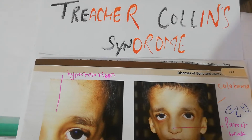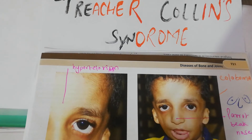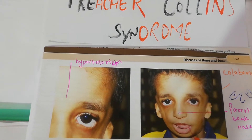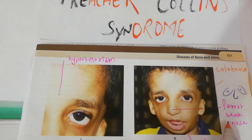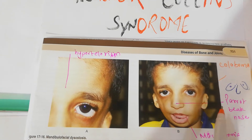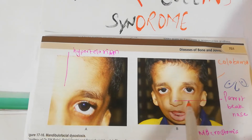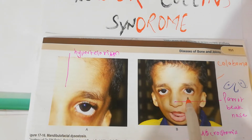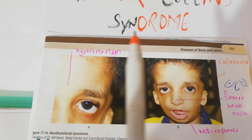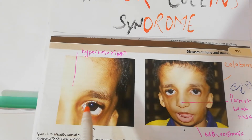This is Treacher Collins Syndrome — a mandibulofacial deformity where the mandible is recessed. Here you can see a parrot beak nose which gives a bird face appearance and fish-like appearance. A very important feature is coloboma, which means a defect in the lower eyelid and deficiency of eyelashes. Hypertelorism means there is a far distance between the two orbits.